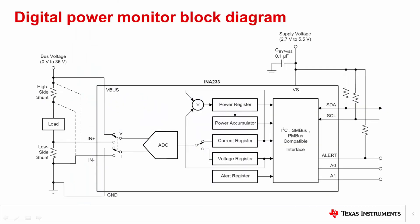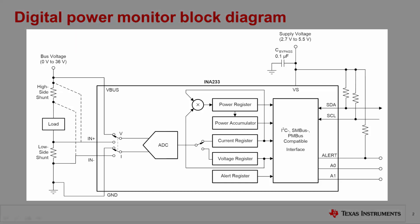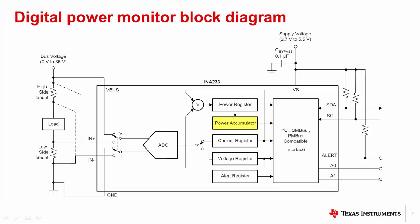Digital power monitors are current sensing devices that measure both shunt voltage and bus voltage. A programmable calibration register combined with an internal multiplier also enables direct readouts of load current and power consumption. The block diagram here shows the INA233 as an example. This device also comes with a power accumulator for energy and average power monitoring. Some power monitors may not have all the registers shown here, and some may not have a separate VBUS pin, but instead will monitor bus voltage at the N-pin of the device. Please note the slight differences and refer to the individual datasheets for device-specific information.